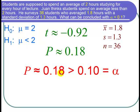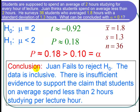So let's state the conclusion. We can say that one fails to reject the null hypothesis. The data is inconclusive. And there is insufficient evidence to support the claim that students on average spend less than 2 hours studying per lecture hour. And I'm done with the problem.